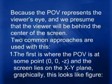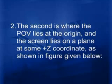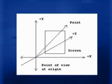Because the point of view represents the viewer's eye, and we presume the viewer will be behind the center of the screen, there are two common approaches. First: the point of view is at (0, 0, -z) and the screen lies on the x-y plane. Second: the point of view lies at the origin and the screen lies on a plane at some positive z value, still parallel to the x-y plane.